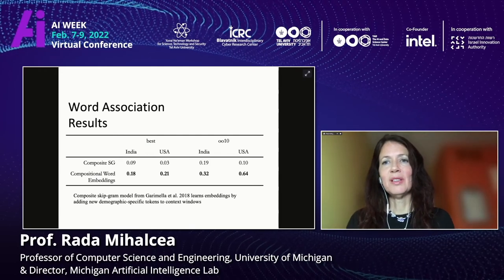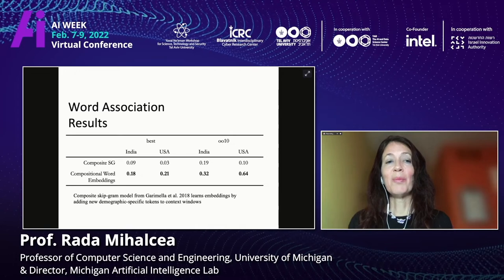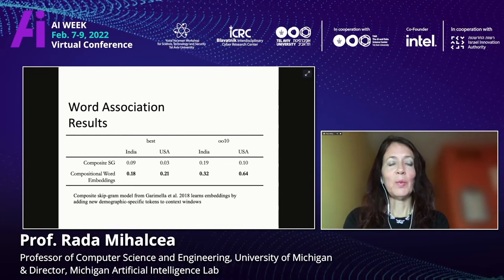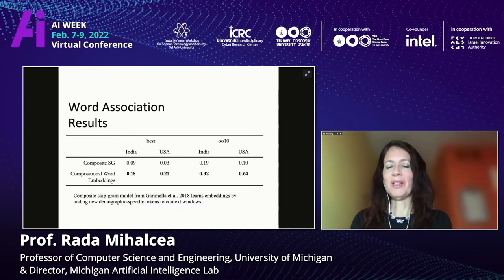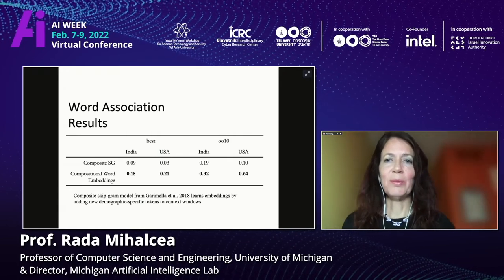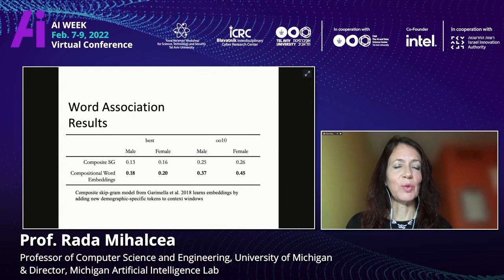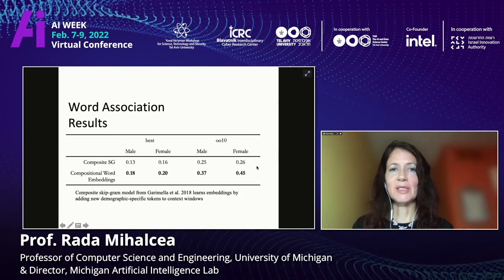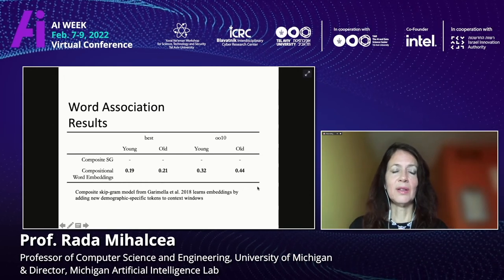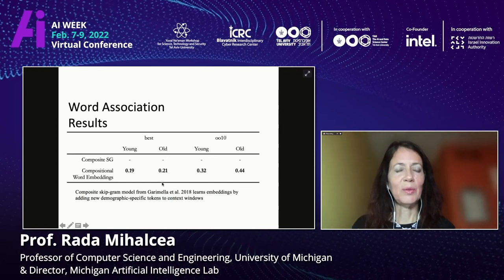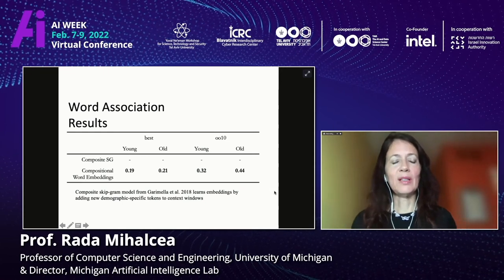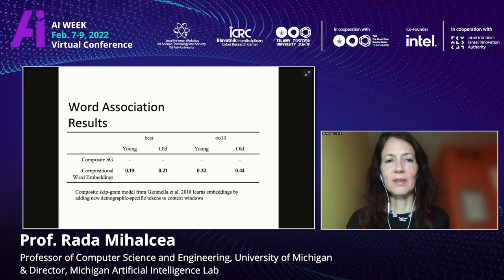The benefit of compositional word embeddings is that we can now compose them. So if we know someone is from India, and we know their gender and age, we can create a word embedding for, say, a young female from India by composing them — and importantly, without having access to any language from that particular user. Here are results for gender: we see significant improvements with this model over the previous study. And for age, which we haven't done before, we see the results from this study using the age grouping — how we can create embeddings and how well they predict the first response that one would provide.